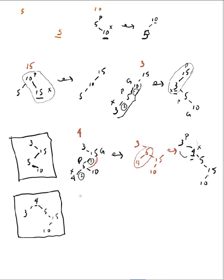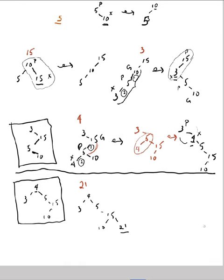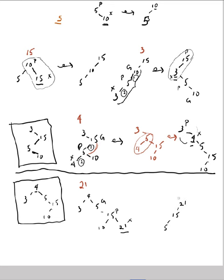Next element I would like to insert is 21. Here's my tree: 4, 3, 5, 15, 10. 21 is greater than 4, greater than 5, greater than 15, so there's my 21 — the newly inserted element. I have X, P, and G, so I'll have a zig-zig rotation. That gives me 21, 15, 5 as a backbone, connecting up to the 4 and the 3. 10 is less than 15, so 10 is 15's left child.